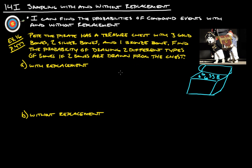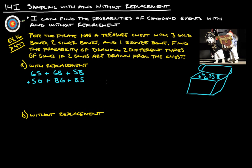So we've got to come up with all the different possibilities — combinations of two different bones. We have gold and silver, gold and bronze, and silver and bronze. We also have those same pairs in reverse order: silver and gold, bronze and gold, and bronze and silver. The good news is gold-then-silver and silver-then-gold have the exact same probability, and so do the others. So we just figure out the first set and then double it.